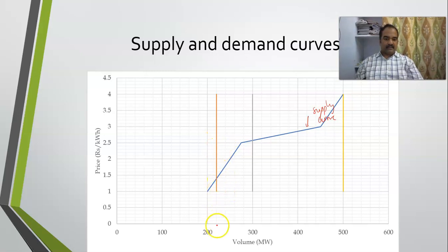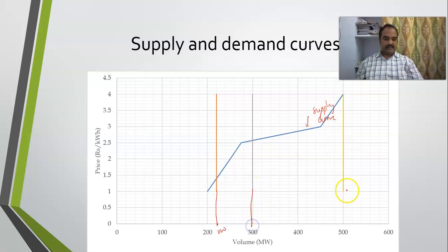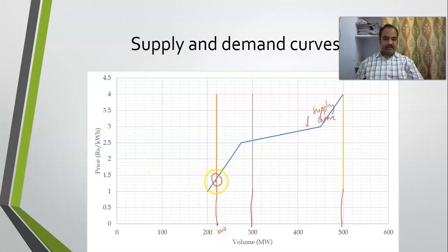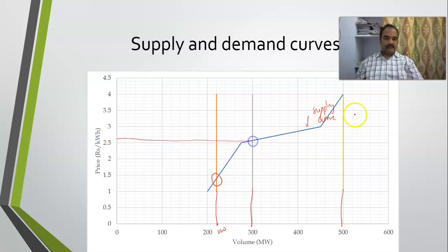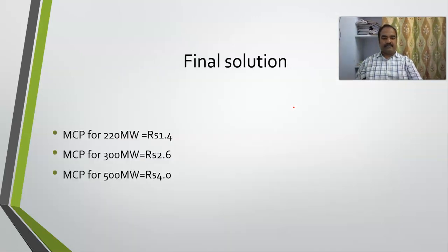Once the supply curve is drawn, I have different forecasts of demand. If demand is 220 megawatts, I mark this point at 220 and draw a vertical line — this is my 220 MW line. Similarly for 300 MW and 500 MW. The intersection of these lines with the supply curve gives the MCP: if forecasted demand is 220 MW, MCP is around 1.4; if 300 MW, MCP is around 2.6; if 500 MW, MCP is around 4.